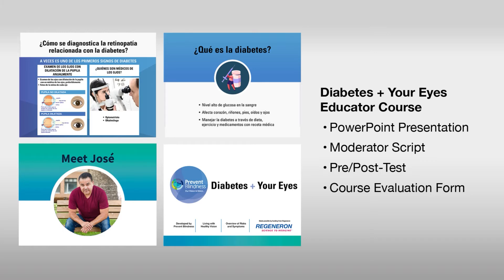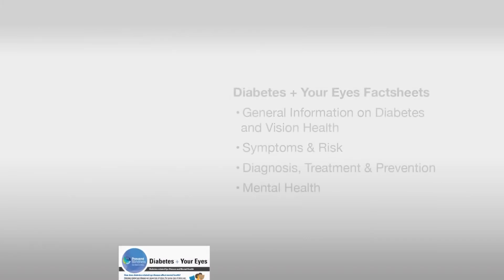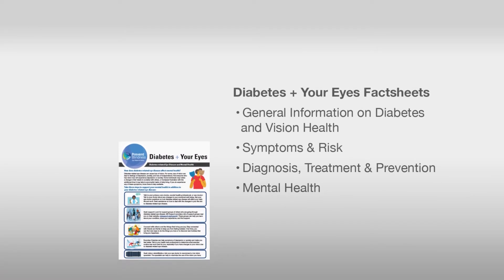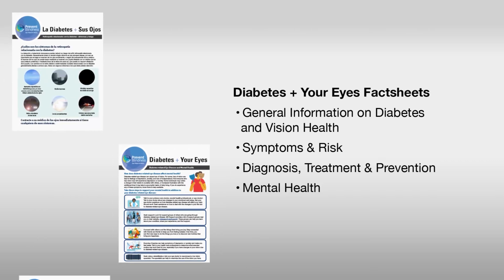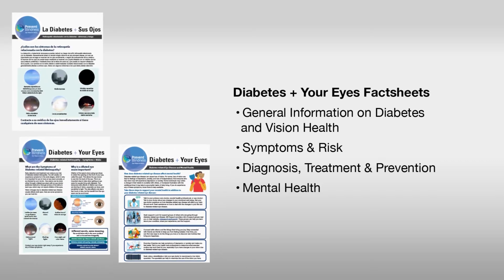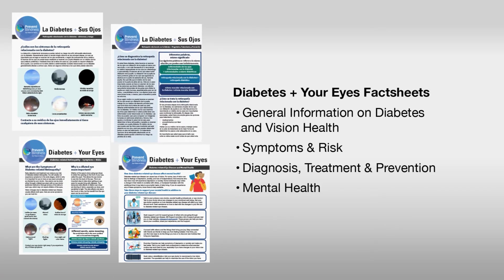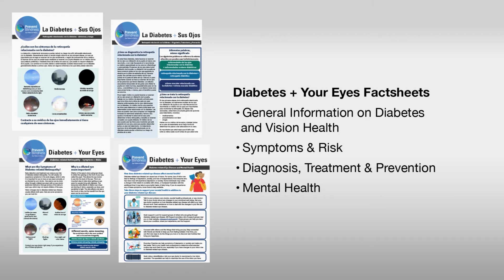The Diabetes and the Eyes Fact Sheets consists of four fact sheets about general information on diabetes and vision health, symptoms and risk factors for diabetes-related eye disease, diagnosis, treatment, and prevention of diabetes-related eye disease, as well as an overview of vision loss and mental health.